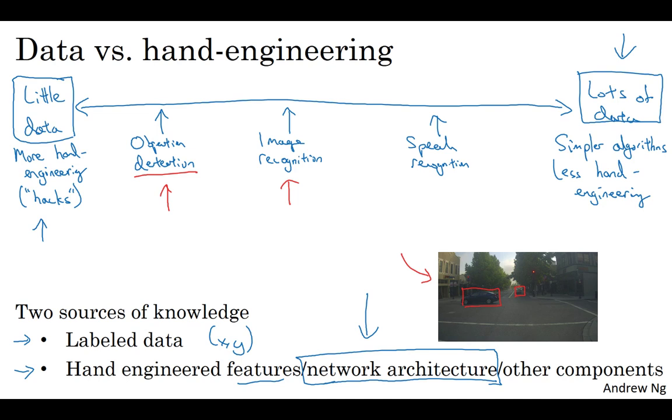Fortunately, one thing that helps a lot when you have little data is transfer learning. And I would say, for the example from the previous slide of the tigon, misty, nider detection problem,